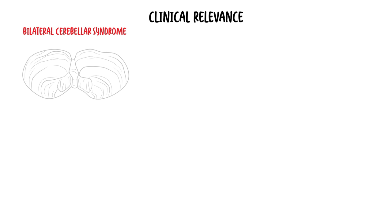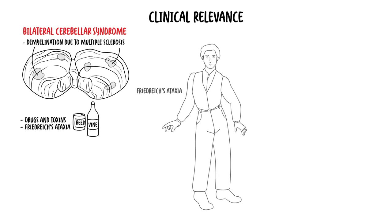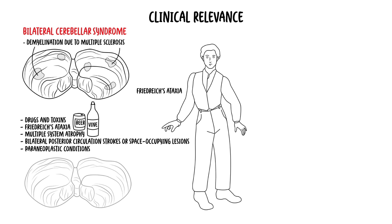Causes of bilateral cerebellar syndromes include demyelination due to multiple sclerosis, drugs and toxins such as alcohol and anti-epileptics such as carbamazepine — which causes cerebellar atrophy — Friedreich's ataxia due to gradual deterioration of neurons in the cerebellum, multiple system atrophy which is a Parkinson's-plus syndrome, bilateral posterior circulation strokes, space-occupying lesions, and paraneoplastic conditions such as antibodies that attack the cerebellum in the presence of malignancy.